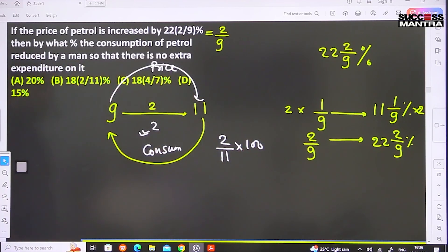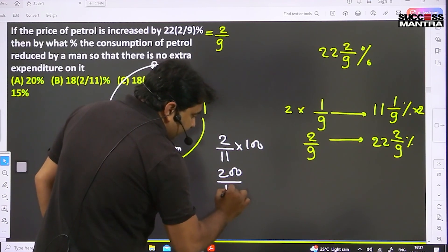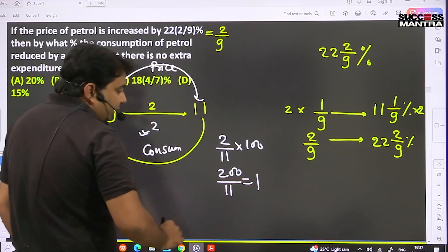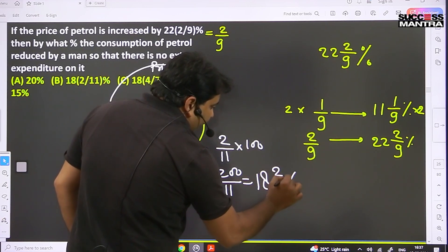11 into 11 is 121, 88, 18... 2/11 percent. That's 18 2/11 percent.